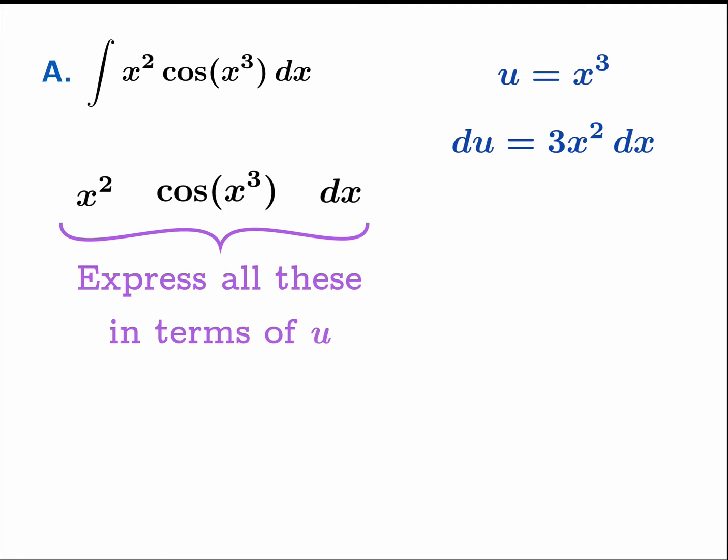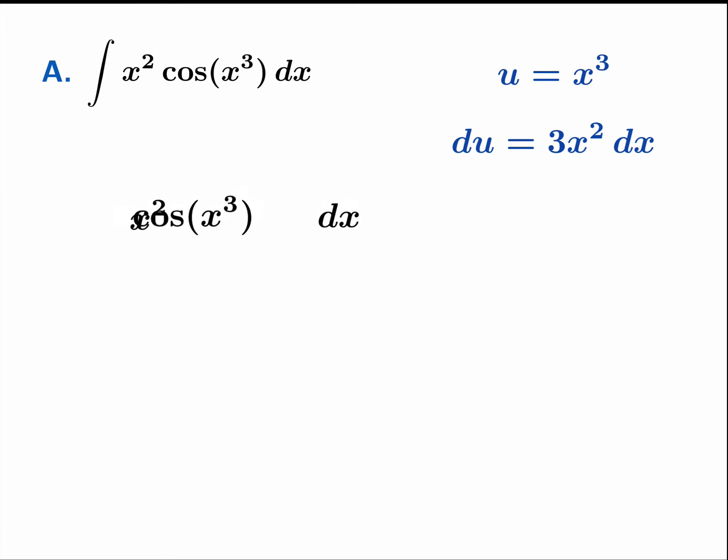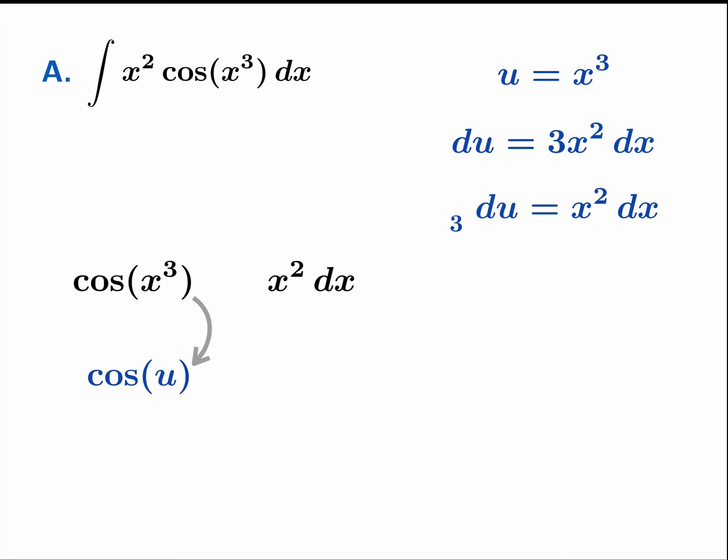Now our goal in this case is, if this substitution is going to be successful, then we're going to need to be able to express all of these in terms of this new variable u. So you can sort of imagine how to rearrange these so that you're successful. In the first term here, cosine of x cubed, we can rewrite that as cosine of u. And if we do a little algebra with the differential, we see that one-third du is equal to x squared dx. So we can swap out the x squared dx for one-third du.